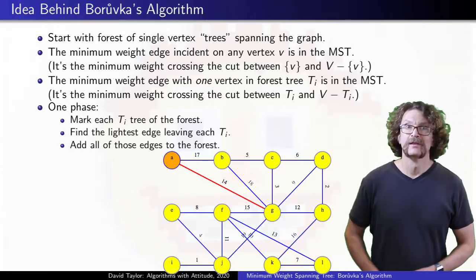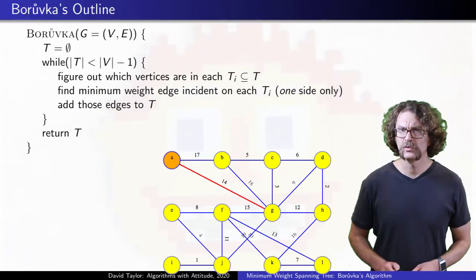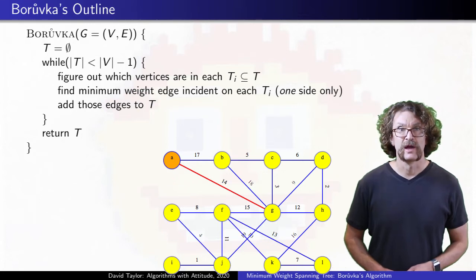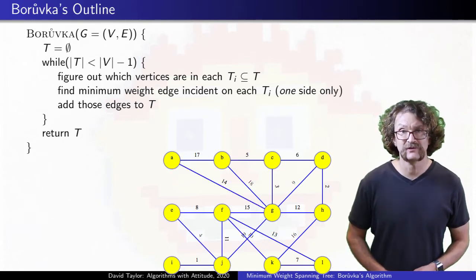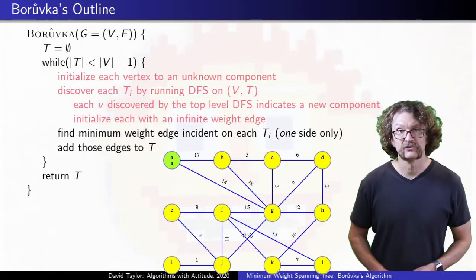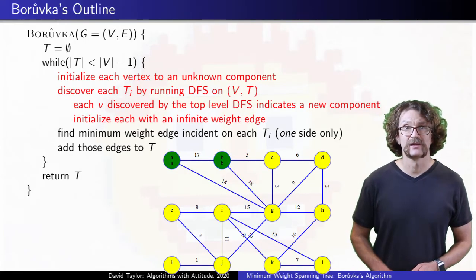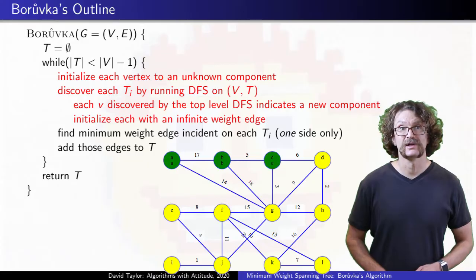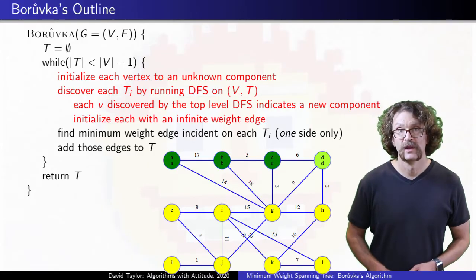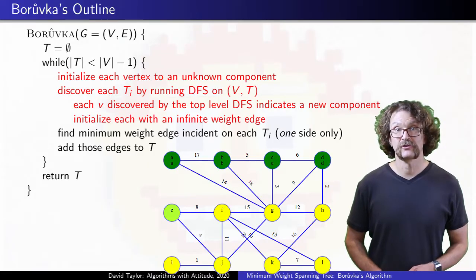That gives us an outline for the whole algorithm, but we should fill in some details. How do we know which trees each vertex is in? To start each phase, we will find the components of the graph made of all the vertices and our minimum spanning tree edges that we have found so far. I do that with a depth first search on those edges.